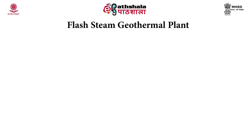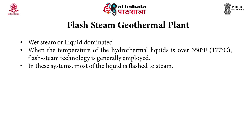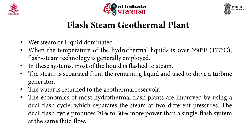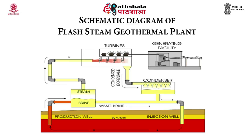The second type is the flash steam geothermal plant, also known as a wet steam or liquid dominated plant. When the temperature of hydrothermal liquids is over 177 degrees Celsius, flash steam technology is generally employed. This is the most common type of geothermal plant. Most of the liquid is flashed to steam; the steam is separated from the remaining liquid and used to drive a turbine generator, while the water is returned to the geothermal reservoir via an injection well.